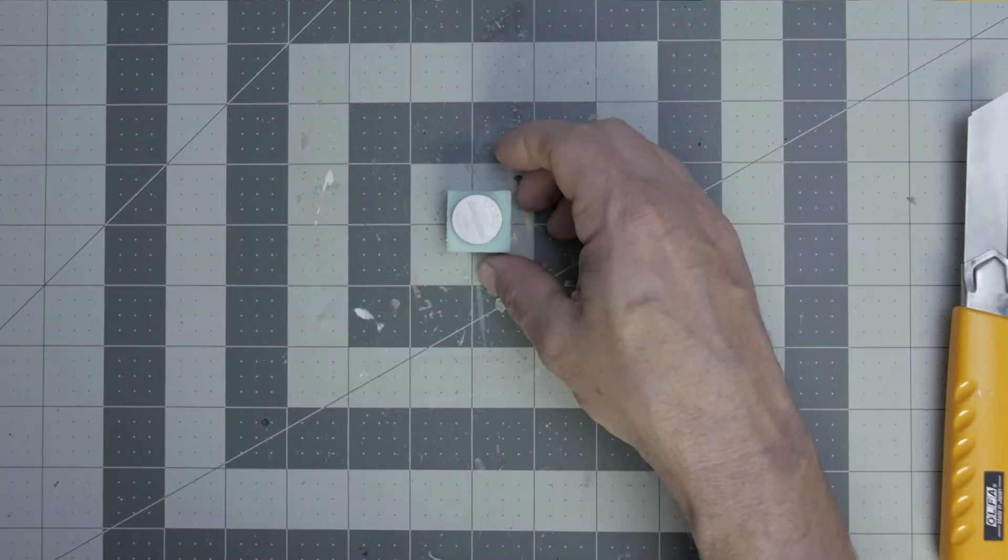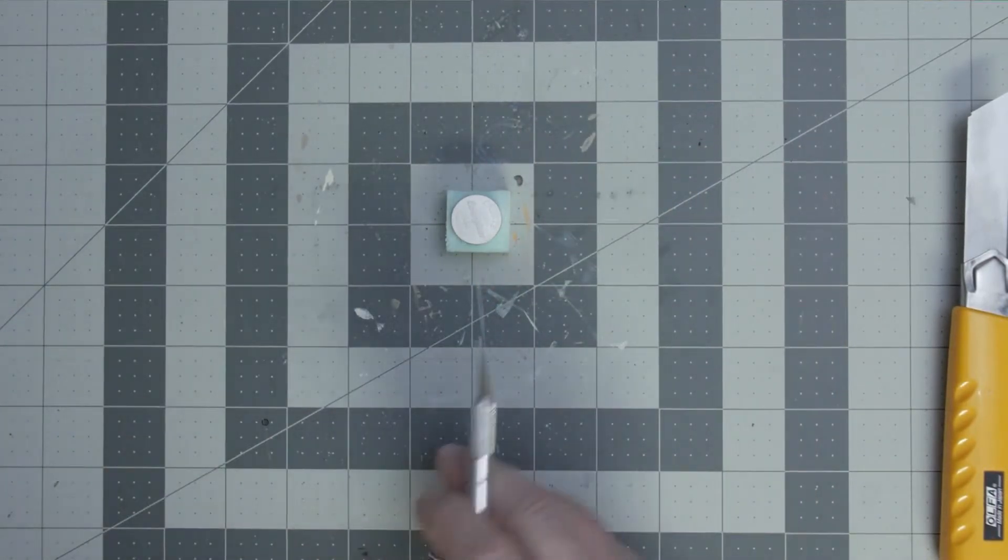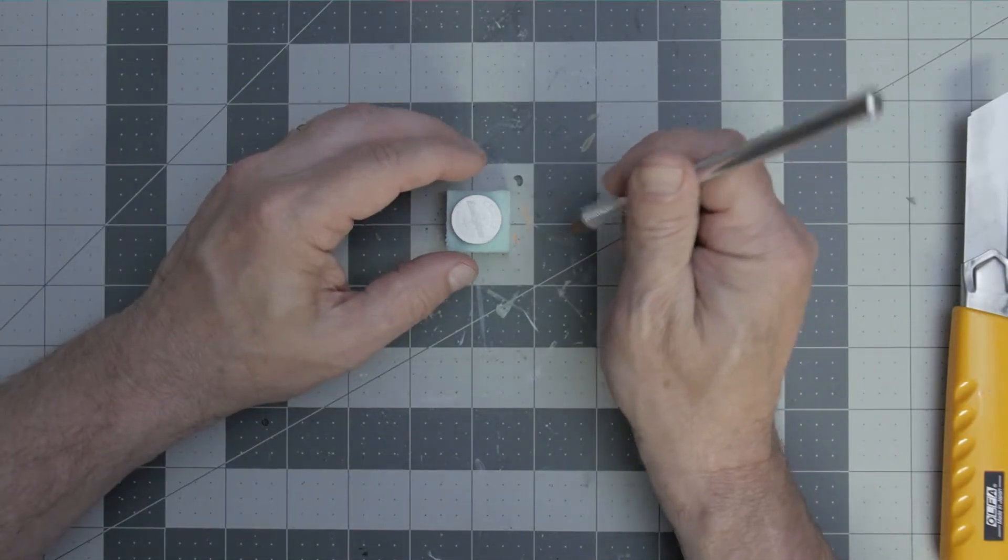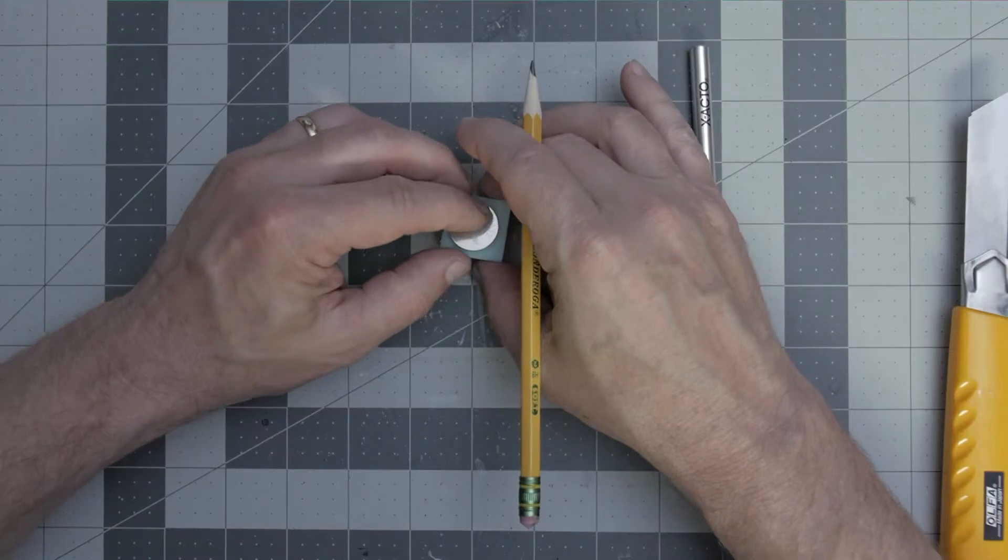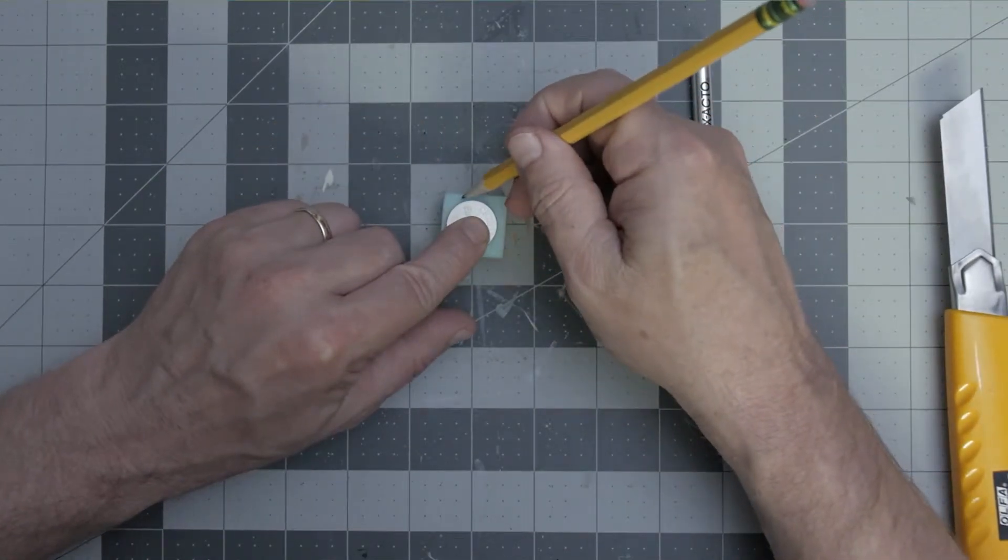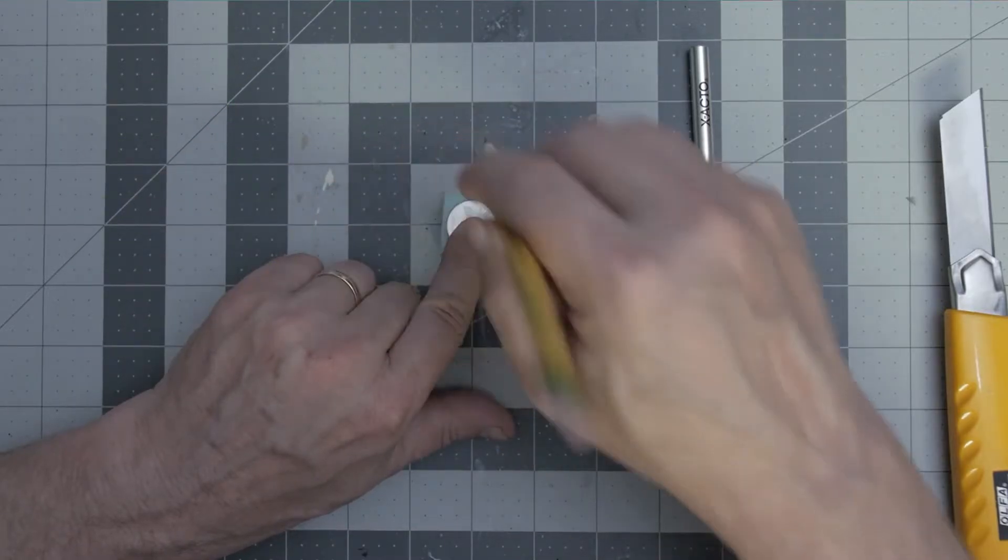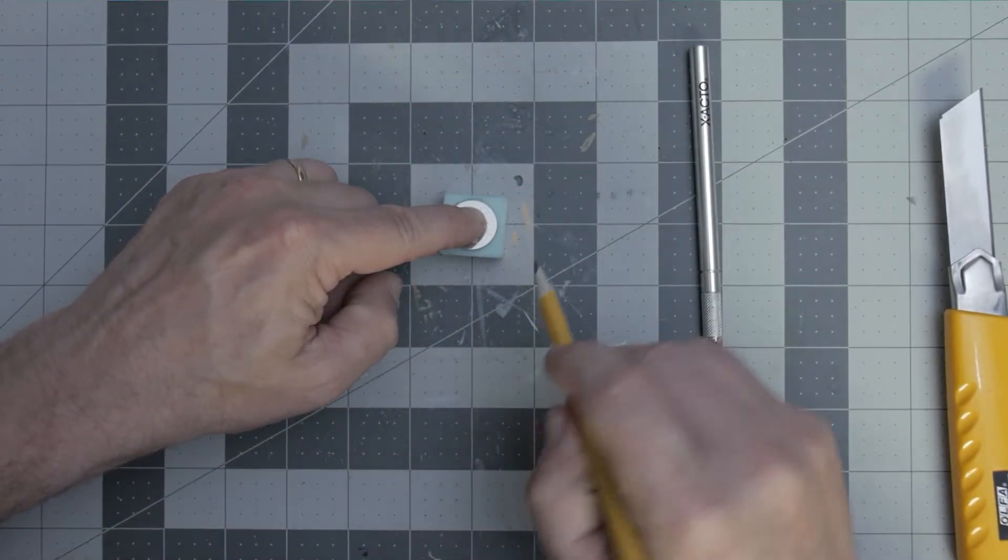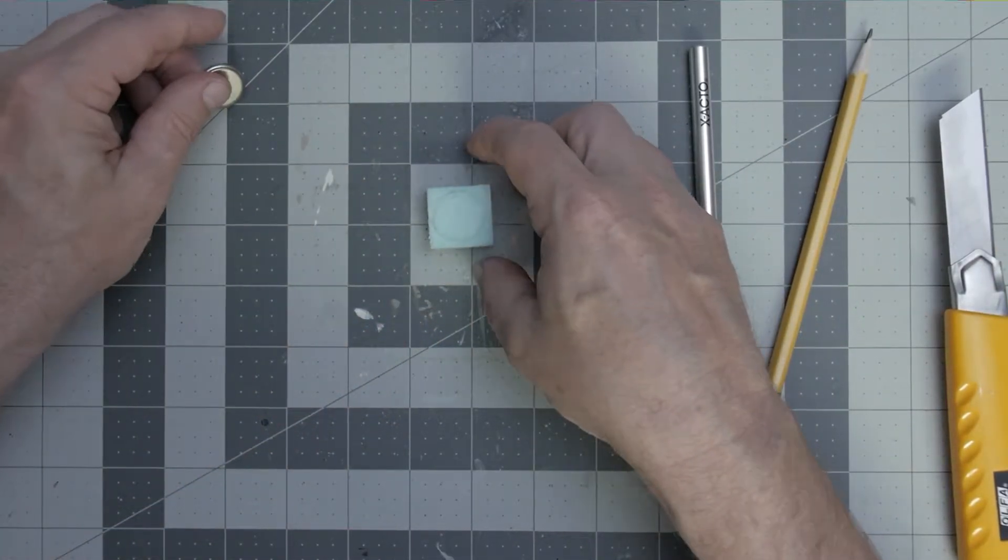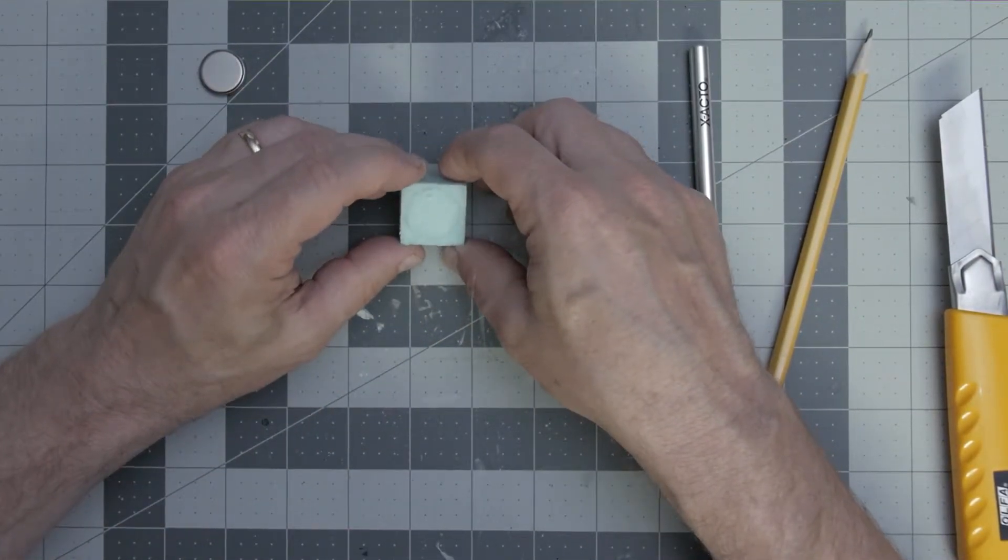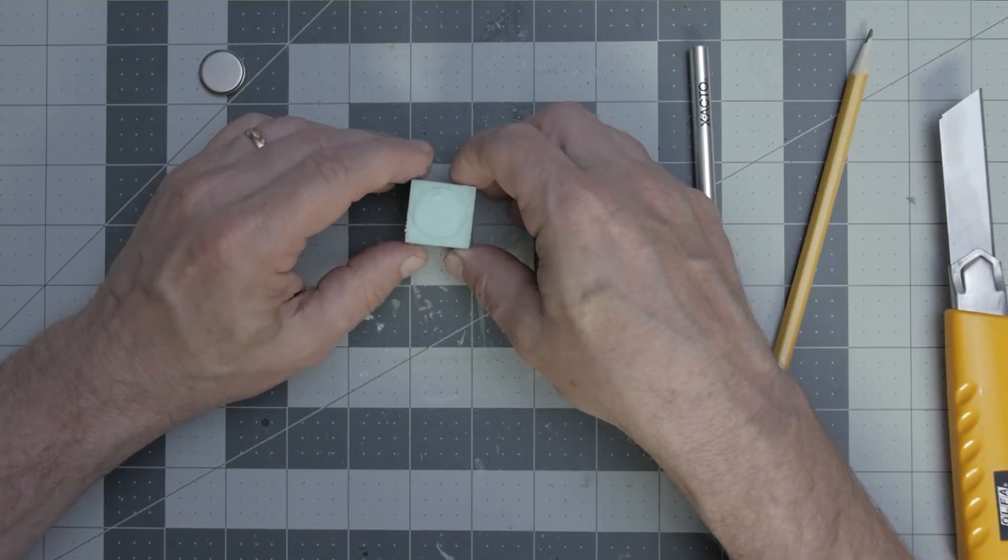So here we go, perfect size. Now I get my little knife because I'm going to carve. Wait, I probably should mark out what I'm going to cut out. Let's get the pencil and we're going to mark it out, outline it, and then we'll know how much we need to cut out.